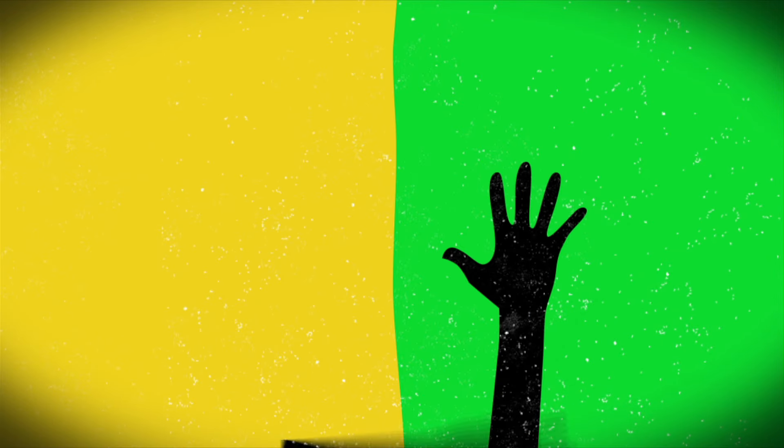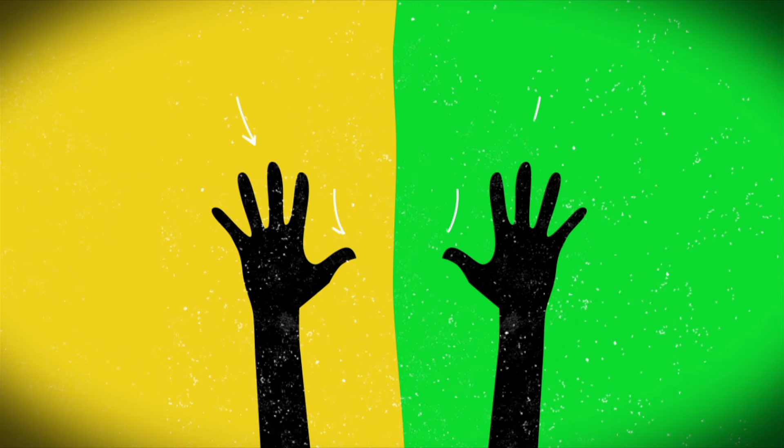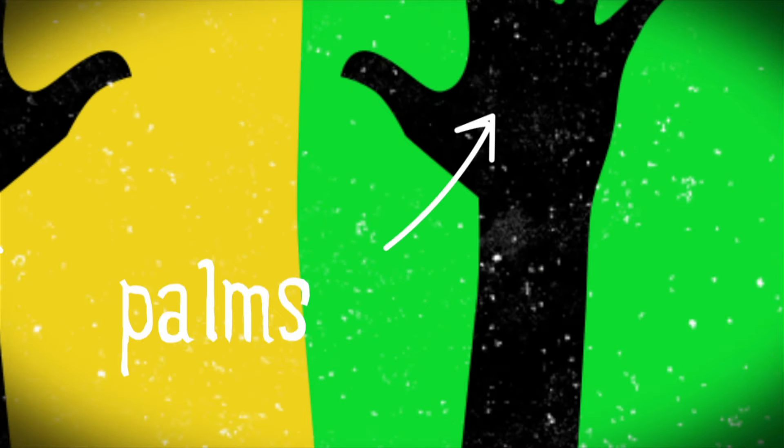Now, take a look at your hands. Notice that your two hands have all the same parts. A thumb, fingers, a palm, etc.